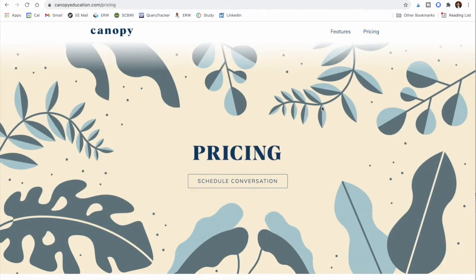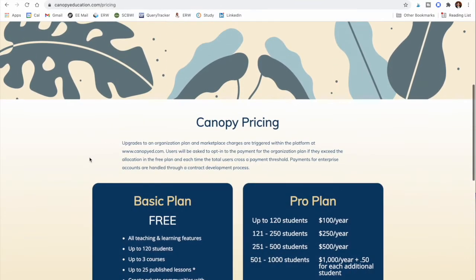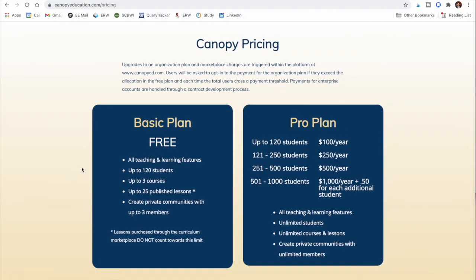The pricing is pretty great — you can get an account for free. If you're someone who just wants to create curriculum to sell to other educators, you don't really have to worry about the student count, because that limit only applies to students you assign curriculum to yourself. Once you reach 120 of your own students, you'd need to pay for a pro plan. But if educators buy your curriculum and have 300 students, you're not paying more because of their students.